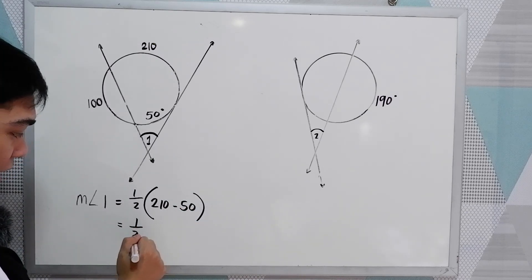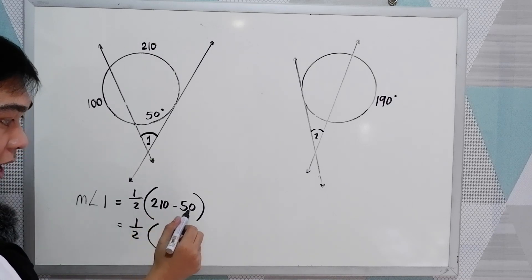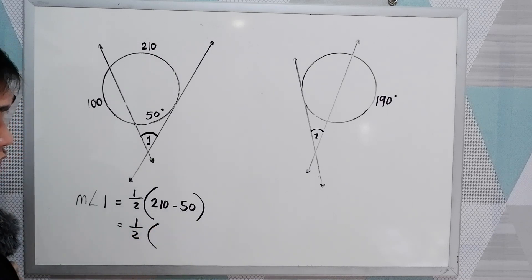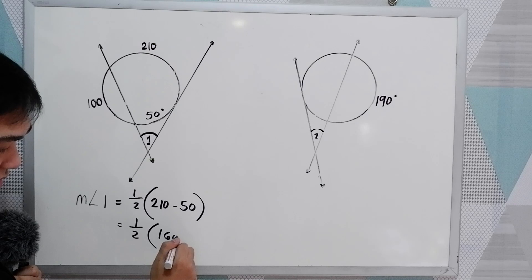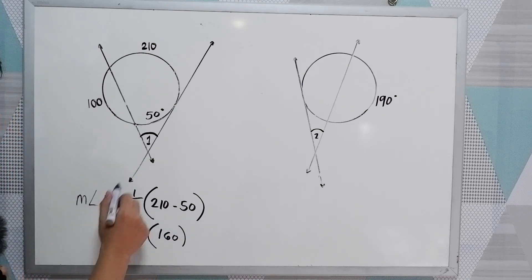Now we have one-half, 210 minus 50. So we have 100, 160. To get the measure of angle 1, half of 160, we have 80 degrees.